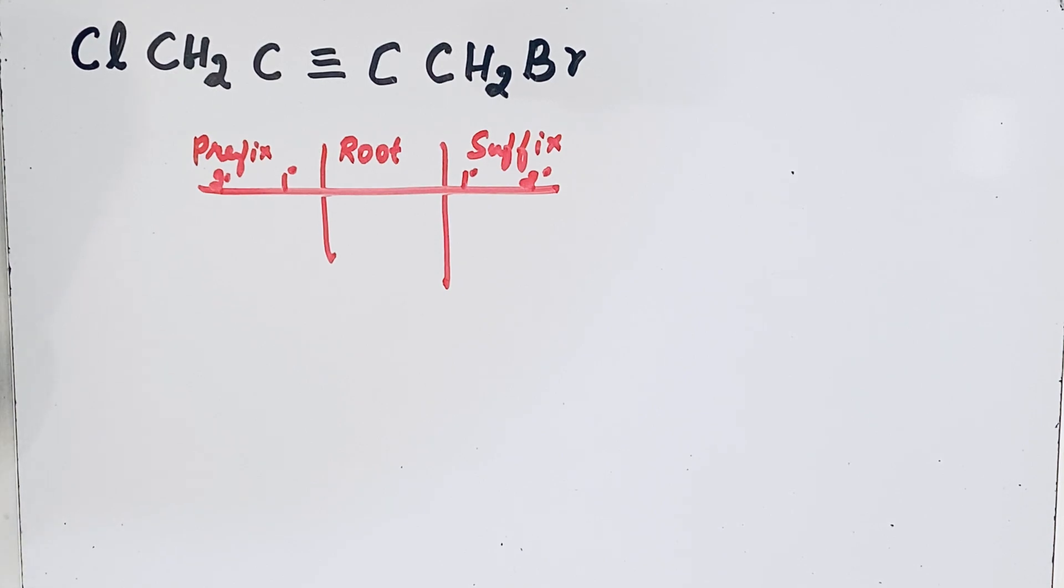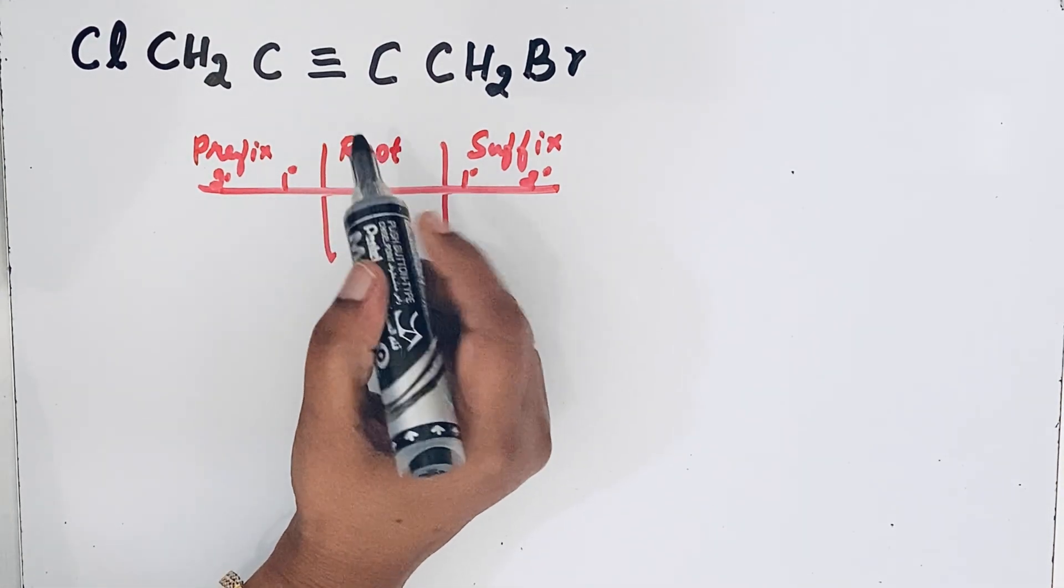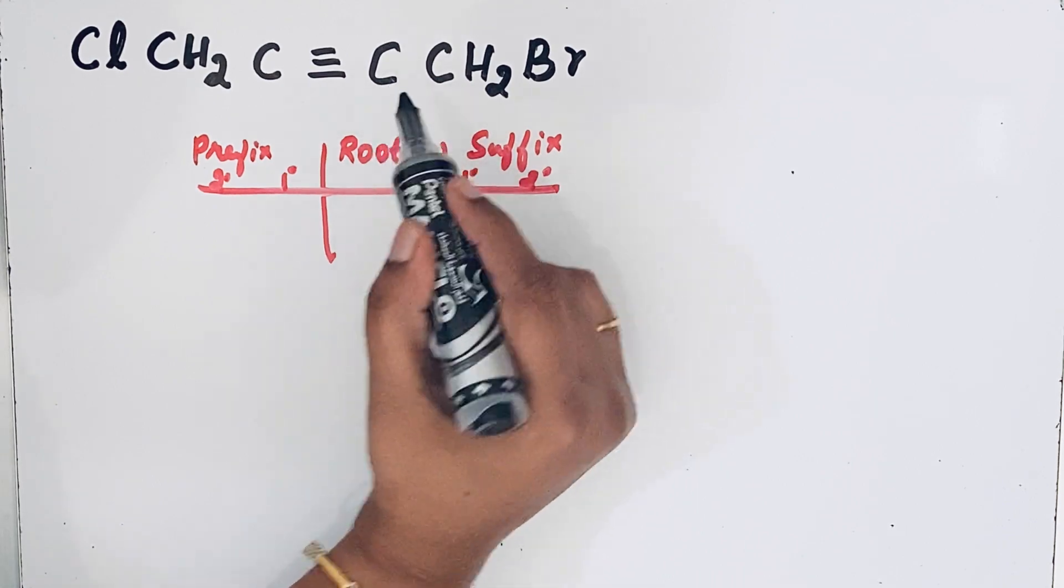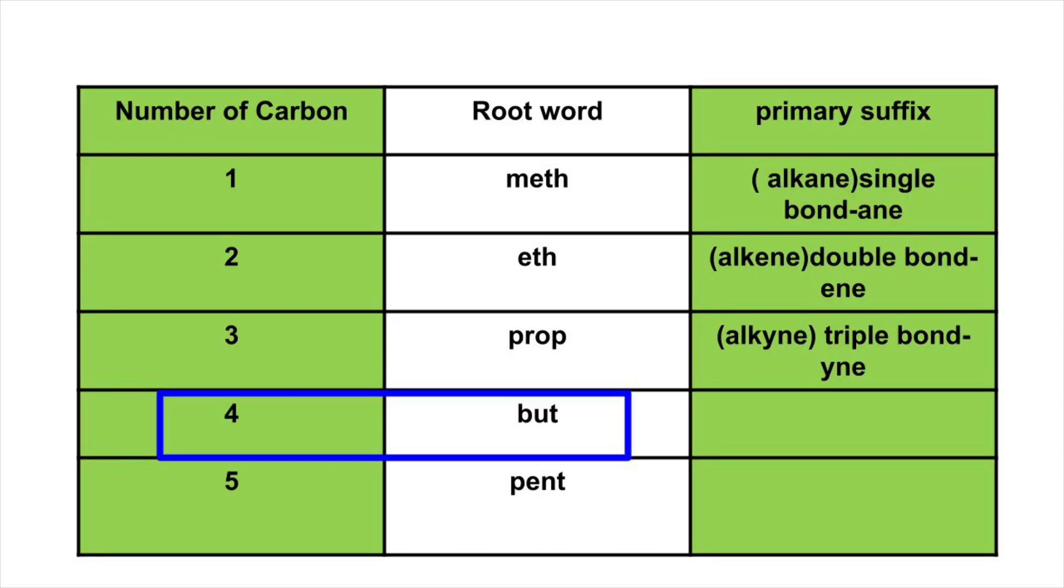To find the root word, first we should know the number of carbon atoms. Here we have 1, 2, 3, 4. Look at the table here. If the number of carbon atoms is 4, the root word is but. So but.